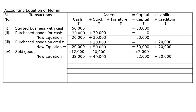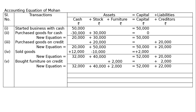Fifth transaction: bought furniture on credit 2,000. Furniture is an asset. We are not paying cash, so furniture will increase by 2,000 and creditors will increase by 2,000 because we are buying on credit. New equation: cash 32,000, stock 40,000, furniture 2,000 equals capital 52,000 plus creditors 22,000.